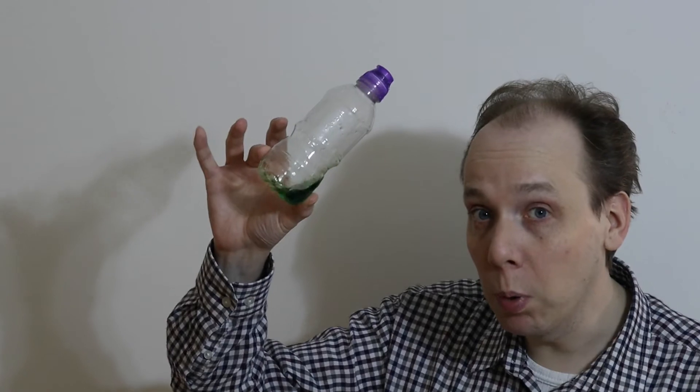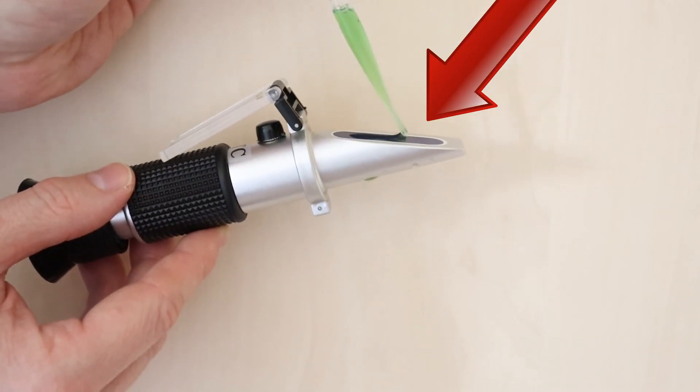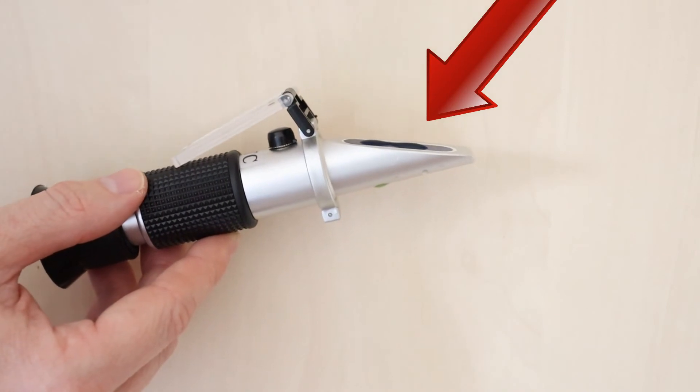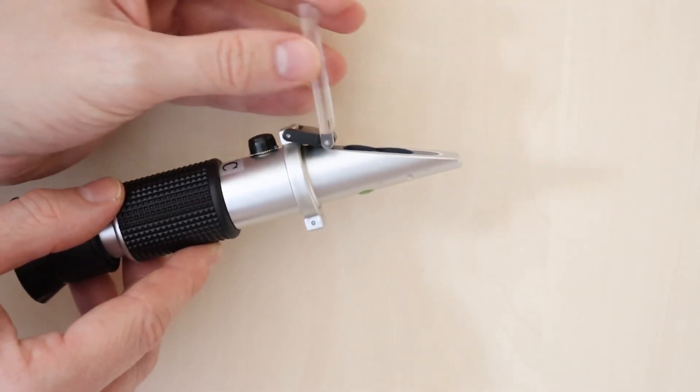Let's test engine coolant with the refractometer using my car as an example. Here's a sample I removed from the expansion tank. Put a few drops of engine coolant onto the refractometer, close the cover, and look through the eyepiece.